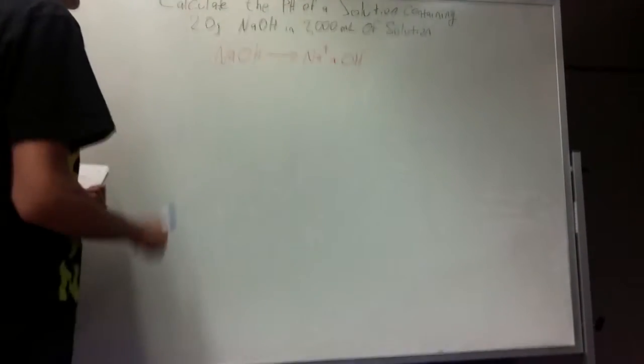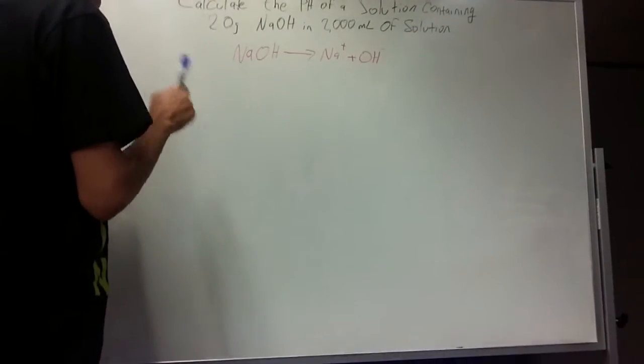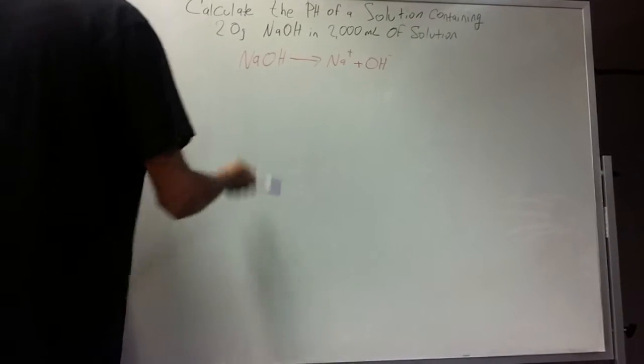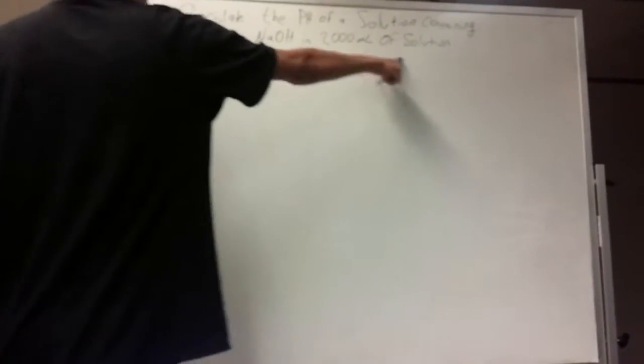Calculate the pH of a solution containing 0.20 grams of sodium hydroxide in 2,000 milliliters of a solution. And this is your reaction.